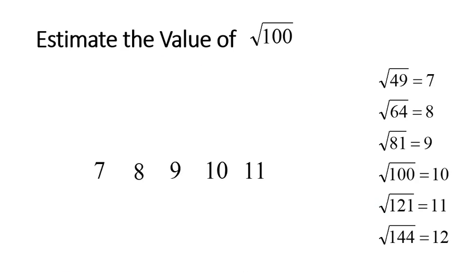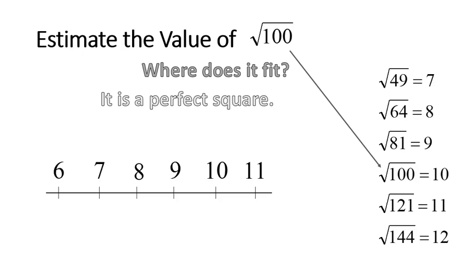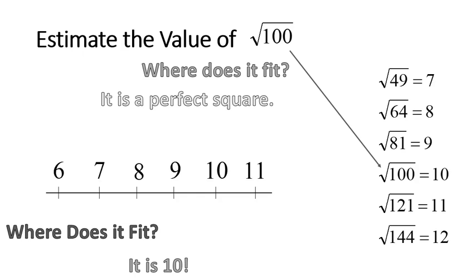Now let's estimate the value of the square root of 100. It's a perfect square, so on our actual number line — 6, 7, 8, 9, 10, 11 — we can show exactly where it fits: it's 10. Estimating the values of perfect squares is a nice thing to do because it fits perfectly into our list.